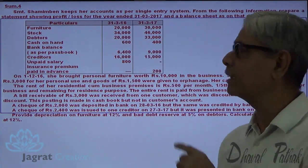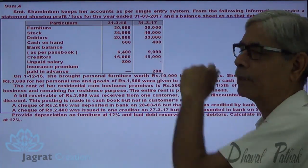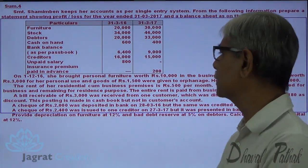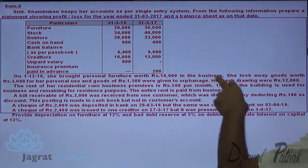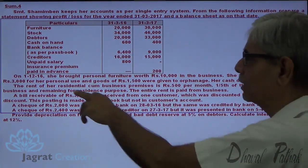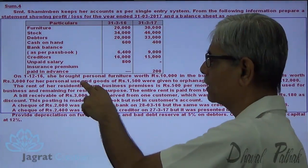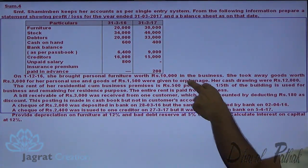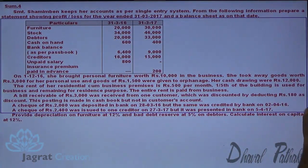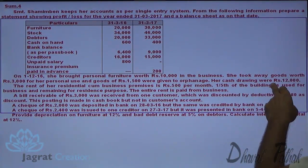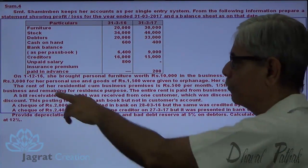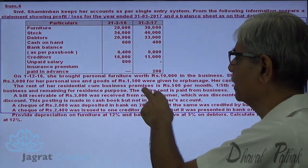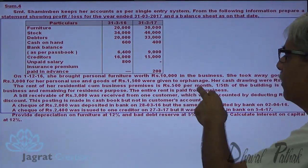The opening balance of furniture is 20,000 and the closing balance is 30,000, so the furniture brought is added to the closing balance. She took away goods worth 3,000 for personal use. Goods of 1,500 were given to an orphanage — this is considered to be an expense. Her cash drawings were 12,000.